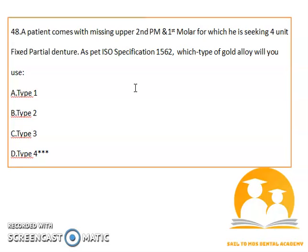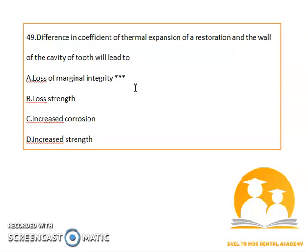A patient has missing upper second premolar and first molar and is seeking a four-unit fixed partial denture. As per ISO specification 1562, the type of gold alloy to be employed is Type 4 gold alloy.